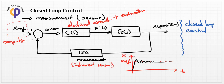At steady state, the error is zero and measurements are taken consistently. We cannot apply proper control methods in open loop control because there is no measurement value from the sensor.